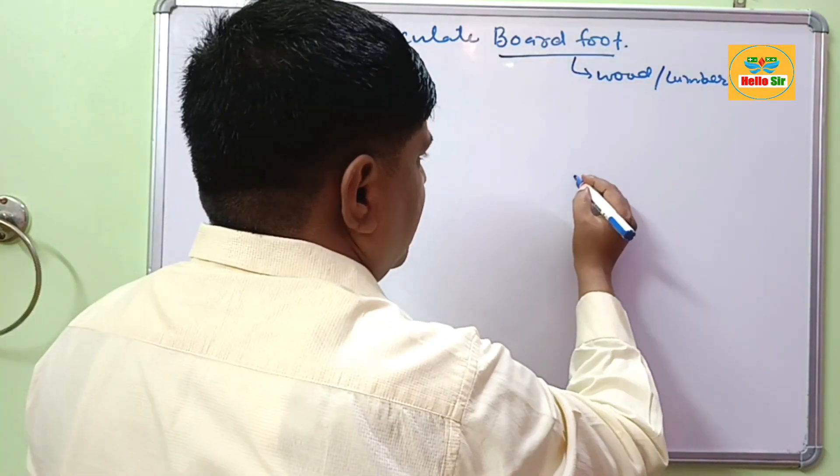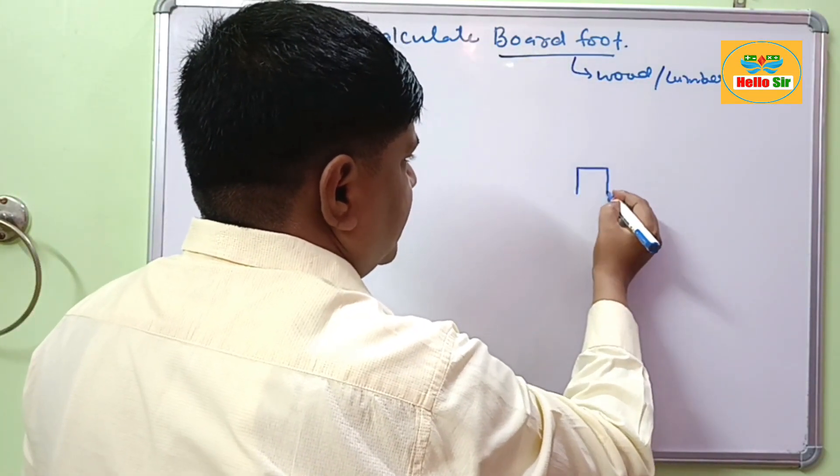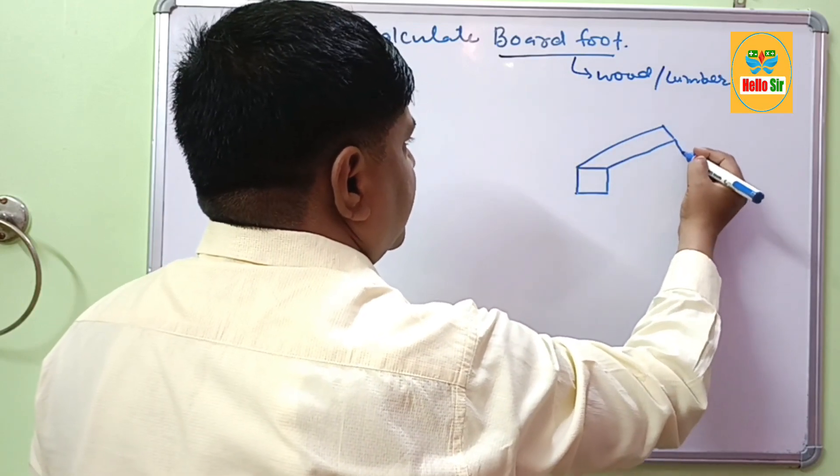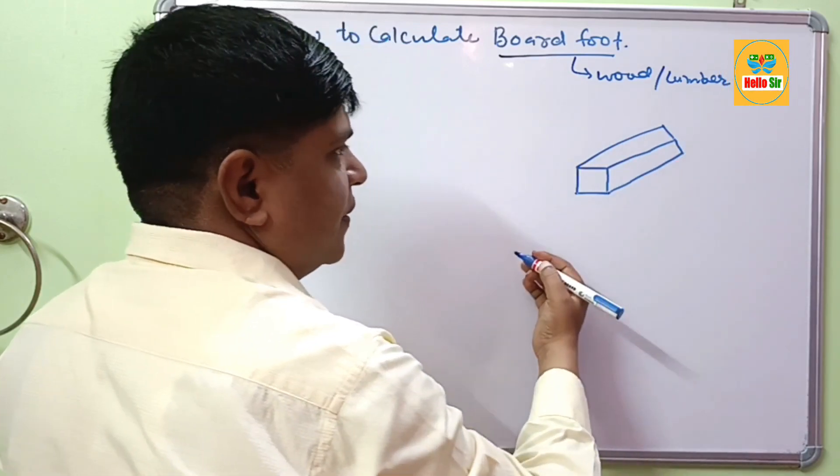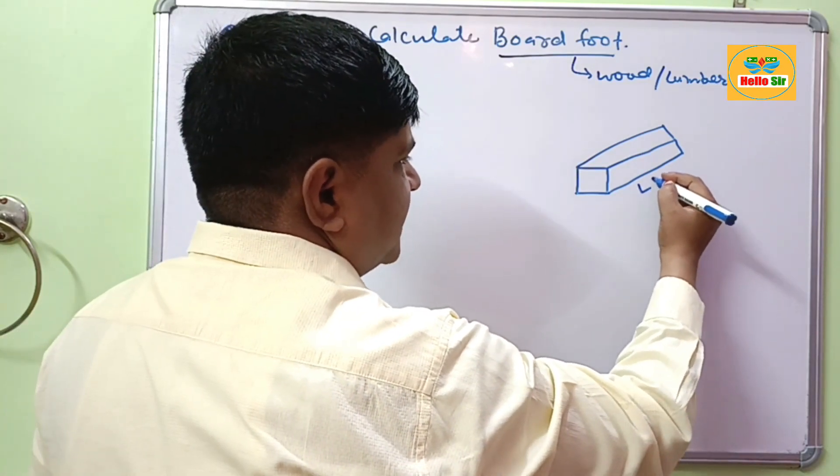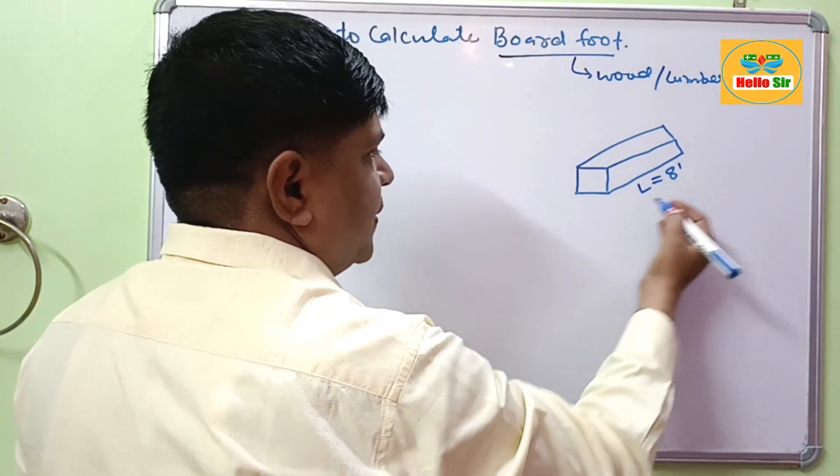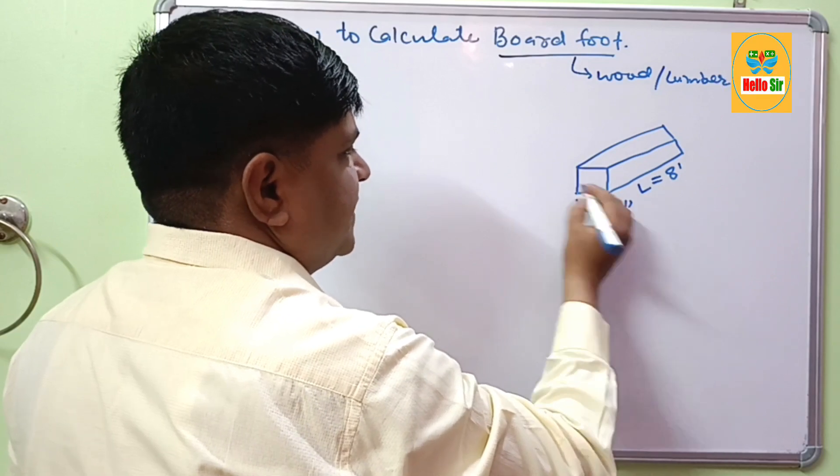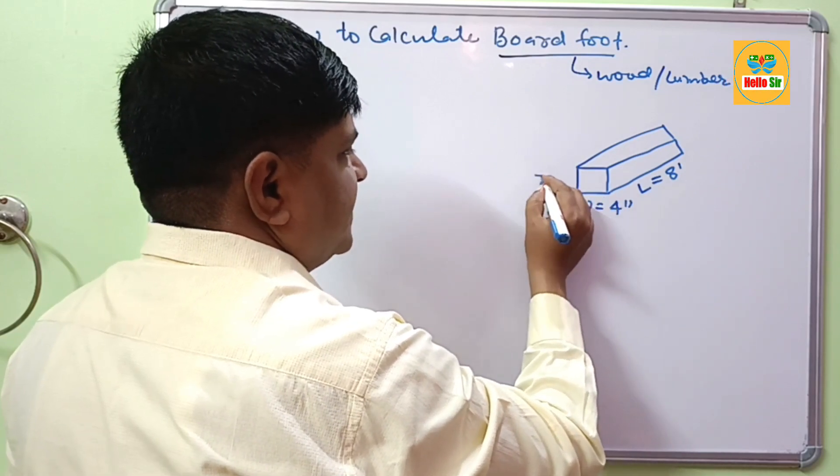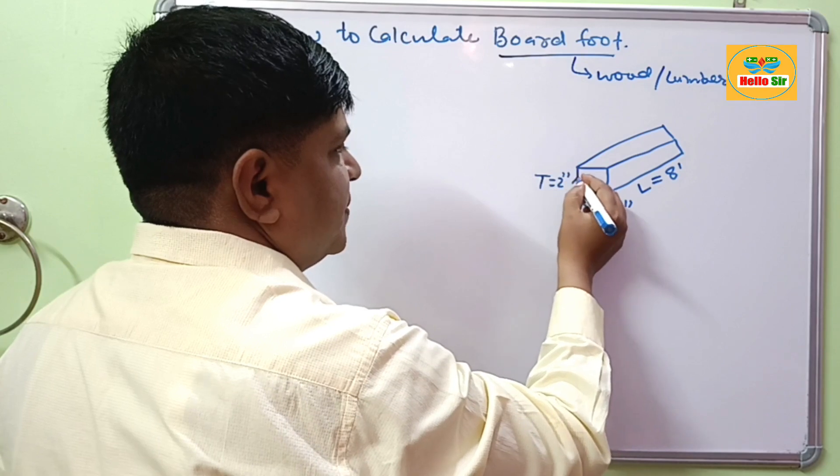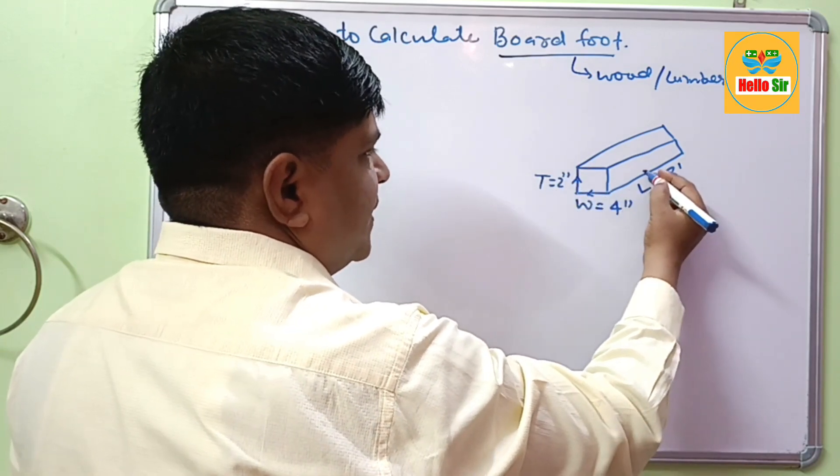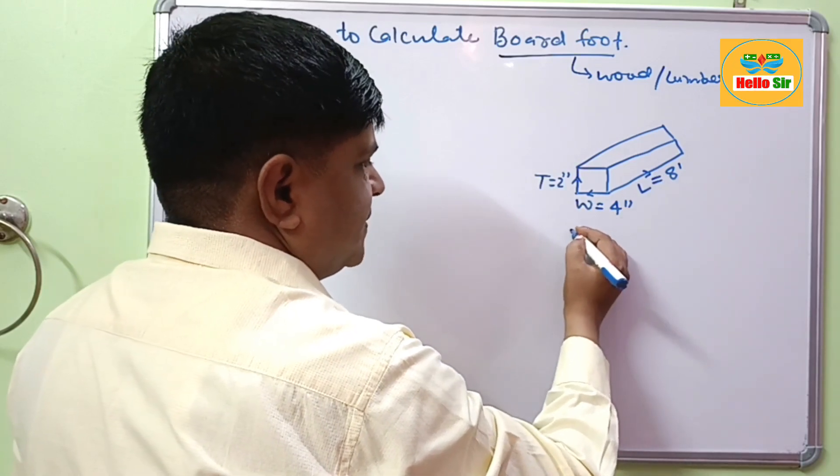Suppose you have a log of wood. This is a log of wood. Suppose the length is 8 foot and the width is 4 inches and thickness is 2 inches. This is thickness of wood and this is width and this one is length. You have the dimension.